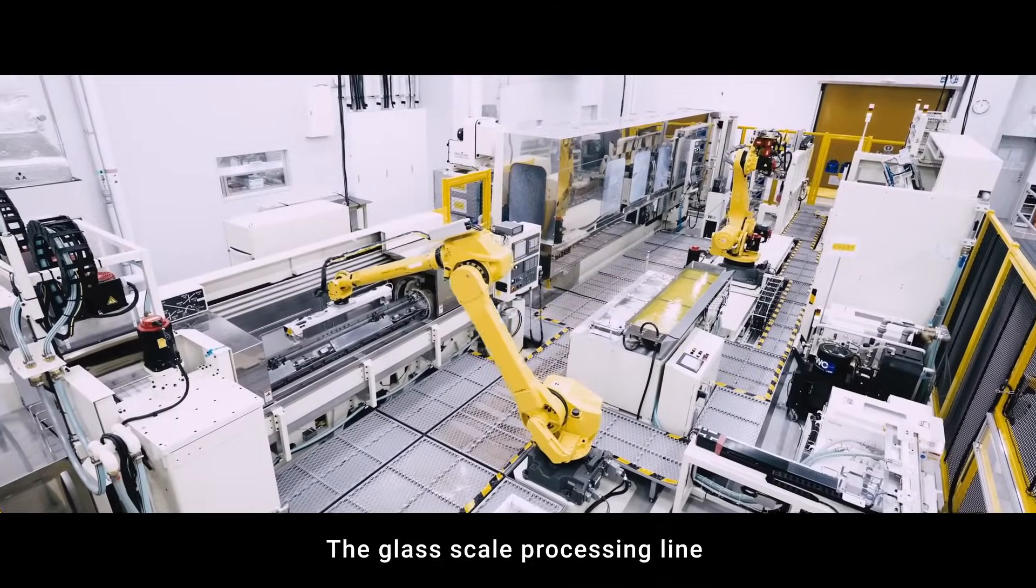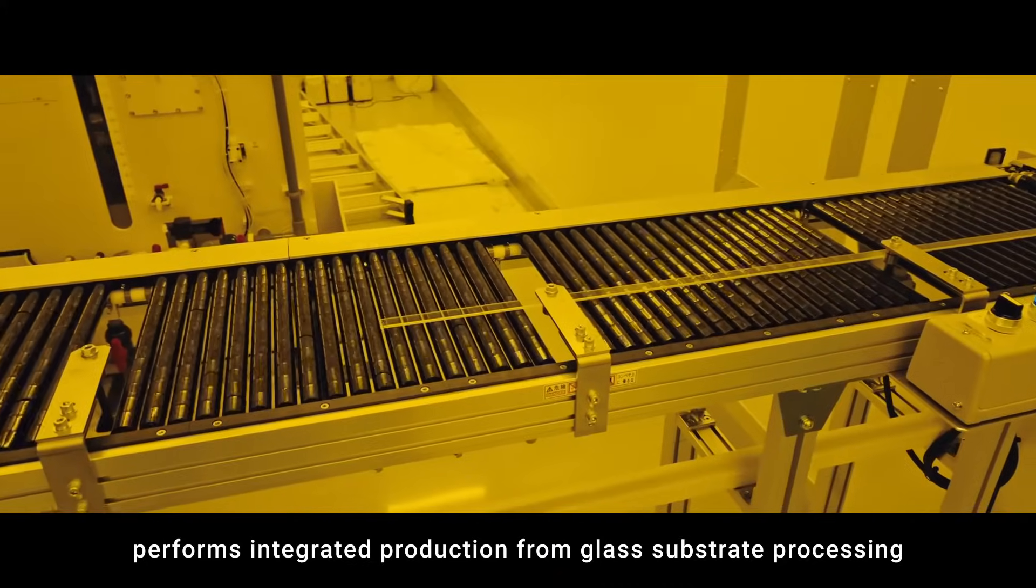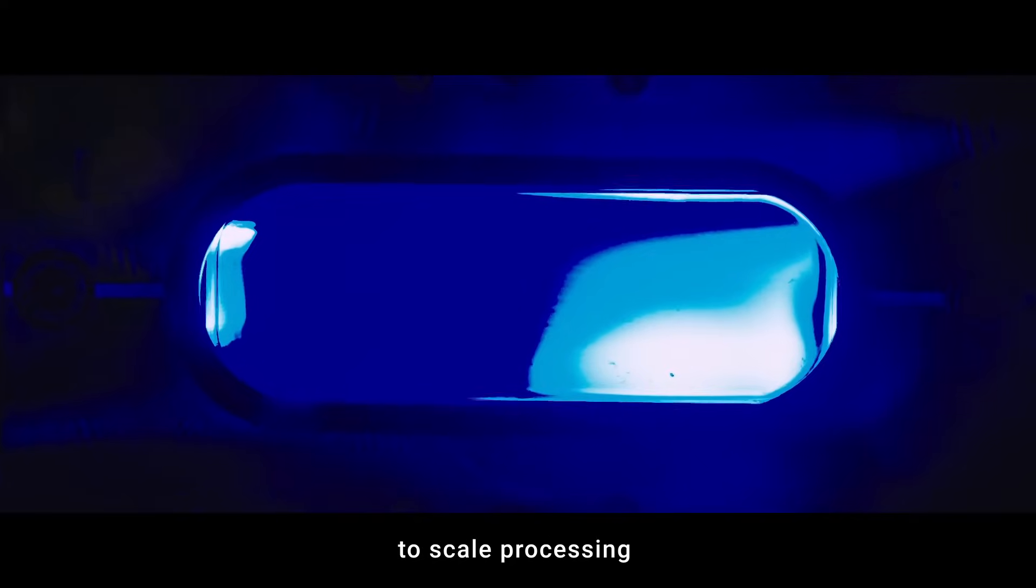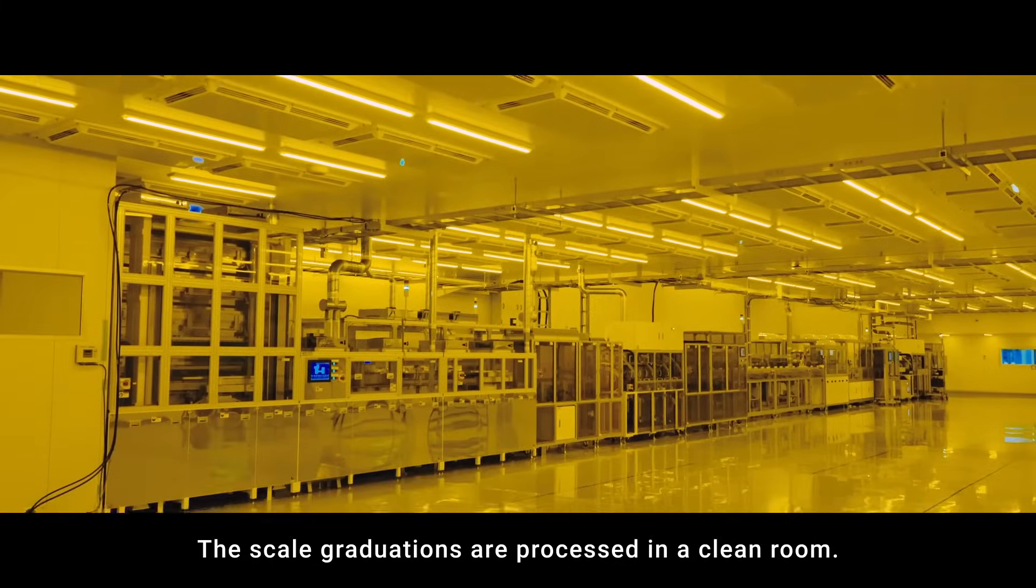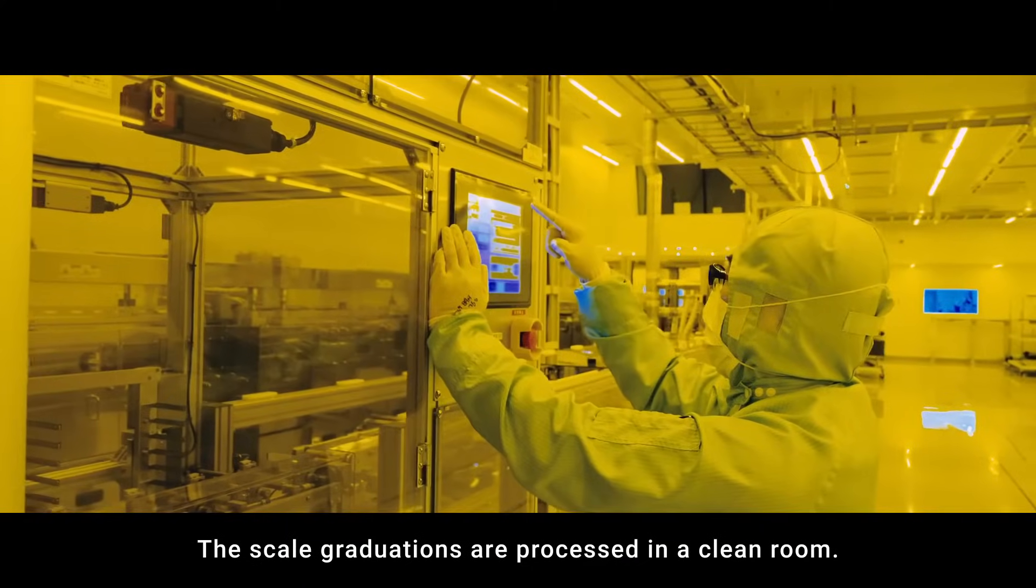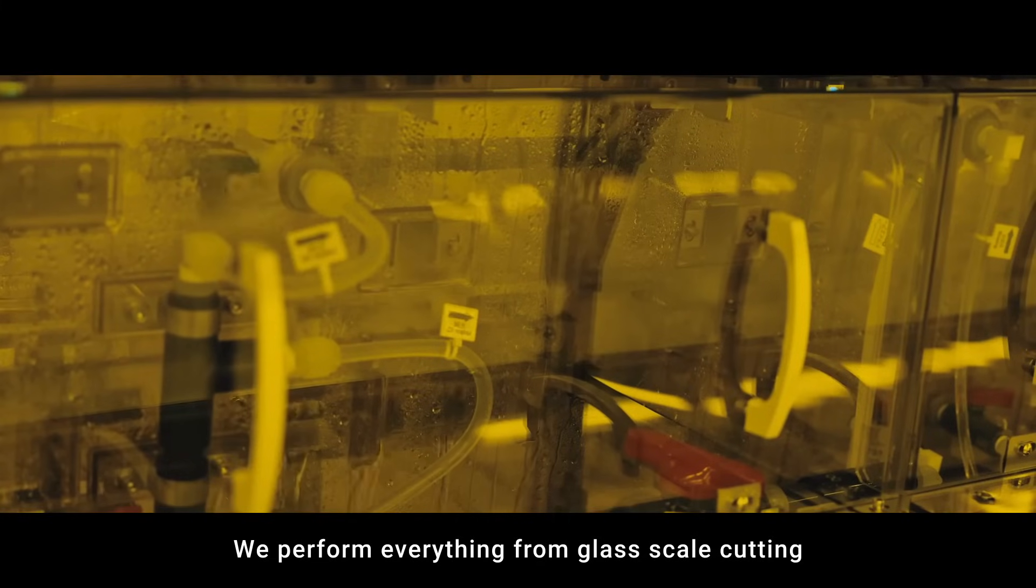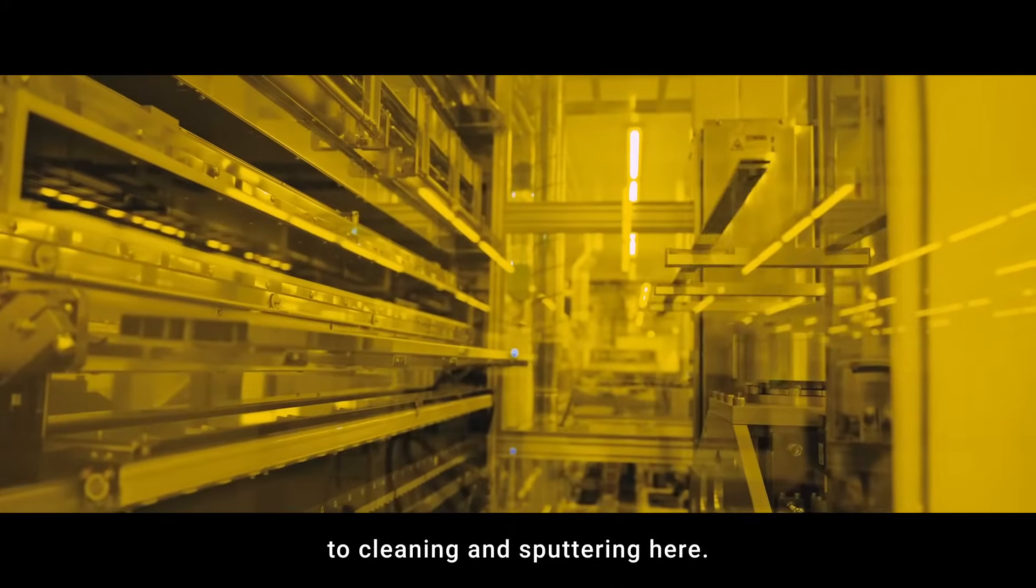The glass scale processing line performs integrated production from glass substrate processing to scale processing, such as sputtering and etching. The scale graduations are processed in a clean room. We perform everything from glass scale cutting to cleaning and sputtering here.